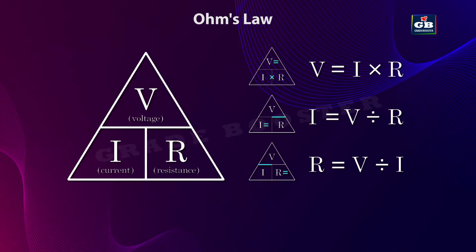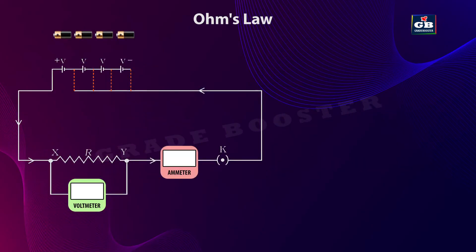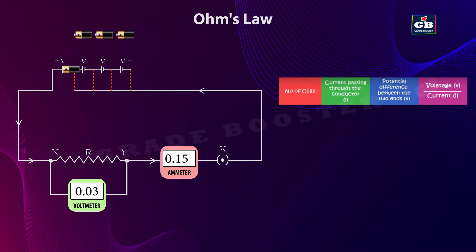Let us see how to verify Ohm's Law with a lab setup. To verify Ohm's Law, we need a few cells, a cell holder, a conductor, an ammeter to measure the electric current, and a voltmeter to measure the potential difference or voltage. Now, connect the circuit and place only one cell in the cell holder. Note down the readings on the voltmeter and ammeter, and write these values in a table.